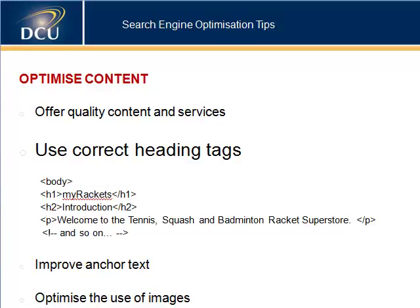Another tip for optimising content is to use correct heading tags. Heading tags H1 through H6 — with H1 being the largest — are used as a visual cue to present structure on a web page. Careful use of these tags can effectively focus the user's attention on relevant sections. If a main heading uses the H1 tag, its subheading would use a smaller H2 tag. Plan out the content of the page and decide on the best places to insert headings.